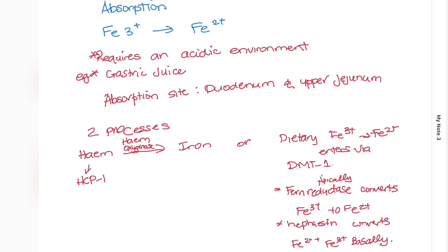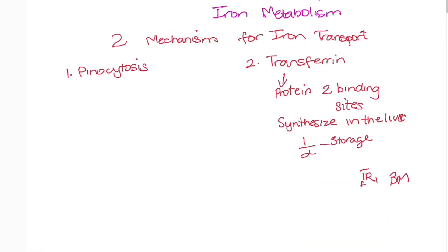Now we're going to focus on the transportation of our iron molecule. Two mechanisms for iron transport exist. Pinocytosis is where erythrocyte precursors absorb iron from macrophages by a process called pinocytosis. Macrophages are a storage for iron, but it's a minor storage.